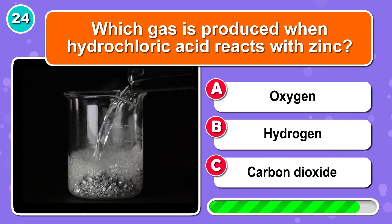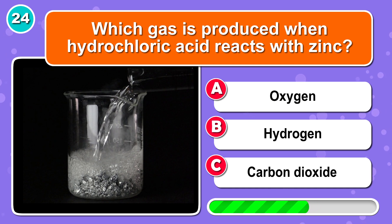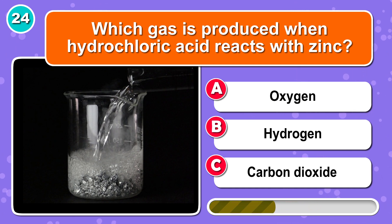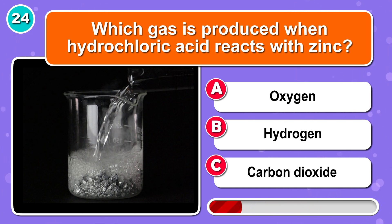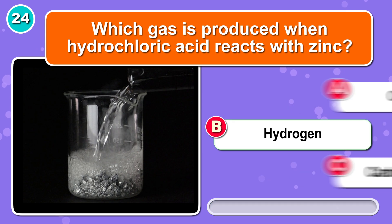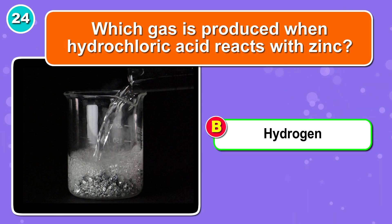Which gas is produced when hydrochloric acid reacts with zinc? That would be B: hydrogen.